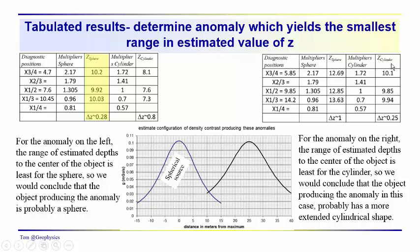Now, if we assume that it's a horizontal cylinder, the range of estimates is about a quarter of what they are assuming a sphere. So once again, we're going to assume that the geological feature producing this anomaly is closer in shape to a horizontal cylinder than to a spherically shaped object. So we would conclude in this case that the anomaly is associated with a source that has a cylindrical shape.